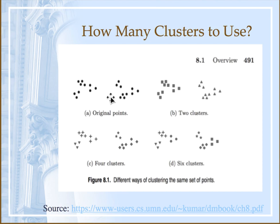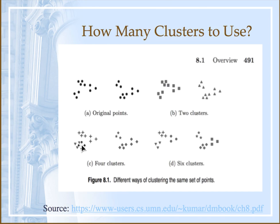In a two-cluster solution, here is one cluster — all marked using the same geometric shape — and here is a second cluster. The idea is that there's something inherently different about the consumers in one group from those in the other. That's the two-cluster or two-segment solution. In this case, you've got four clusters: one here, a second here, a third here, and a fourth here. The data distribution in the two-dimensional space remains the same, but you're partitioning it differently. And here's a six-cluster solution: cluster one, cluster two, cluster three, cluster four, cluster five, and cluster six.